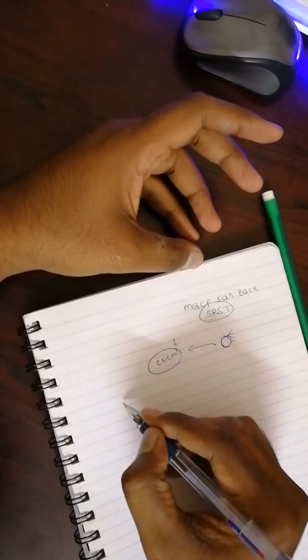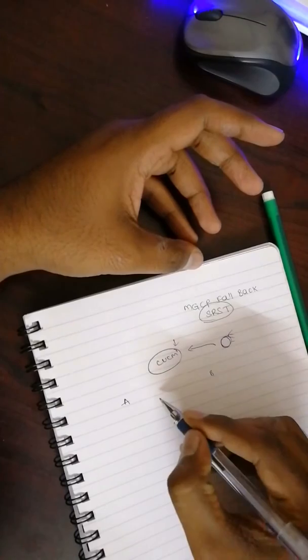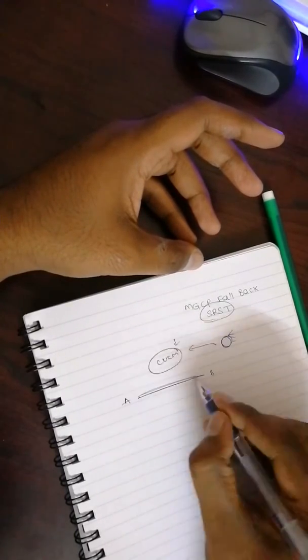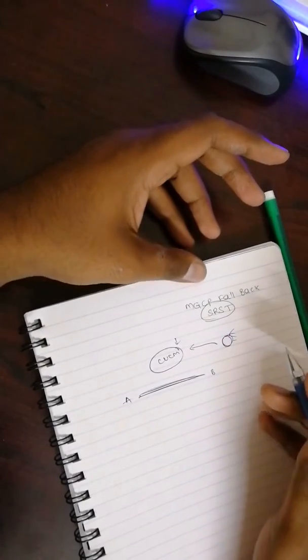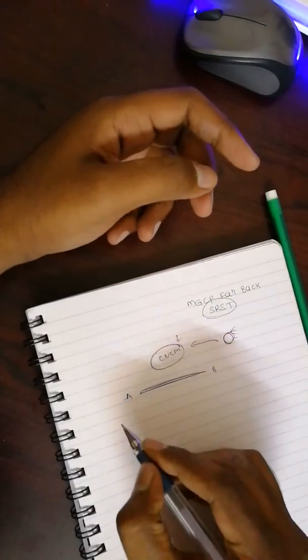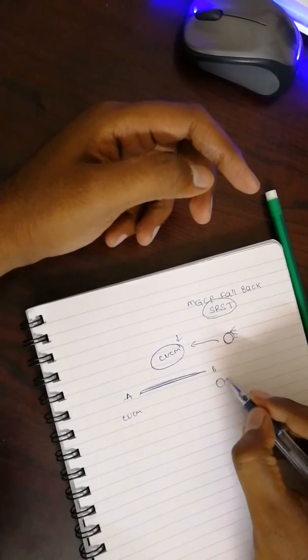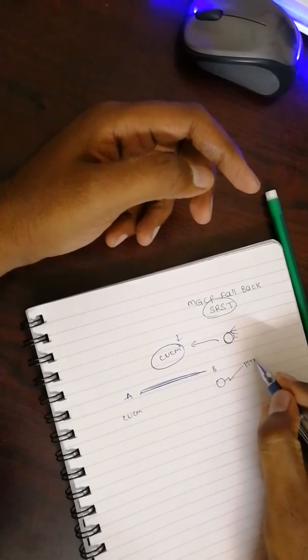We have two sites, Site A and Site B. Both of these sites are connected using MPLS or some sort of WAN connectivity. Here in Site A we have CUCM, and in Site B we have the router where we have the PSTN connectivity.